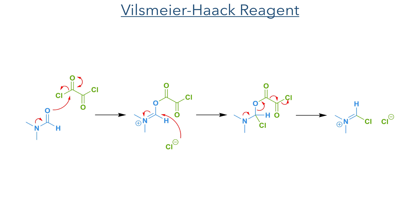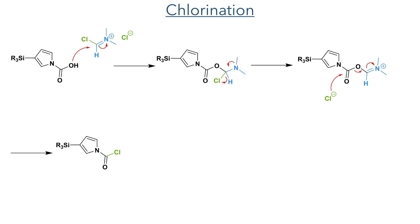To chlorinate this molecule, they used the Vilsmeier-Haack reagent. The reaction of dimethylformamide with oxalyl chloride displaces the chloride, which acts as a nucleophile towards the activated iminium species, causing decomposition of the oxalyl fragment, eliminating carbon dioxide, carbon monoxide, and chloride. This imidazolium chloride species is the active chlorinating reagent. It first acts as an electrophile where it is attacked by the acid, forming an intermediate that eliminates chloride. This chloride then acts as a nucleophile and forms the acyl chloride, together with regeneration of DMF.